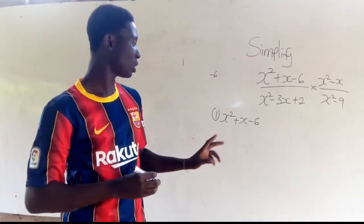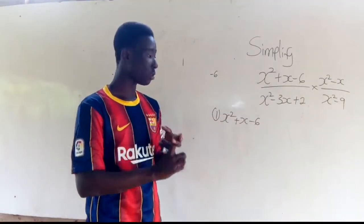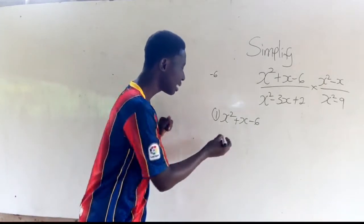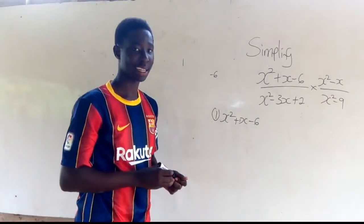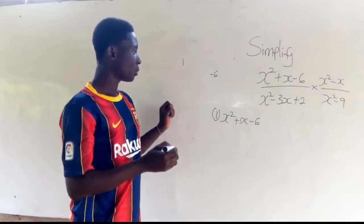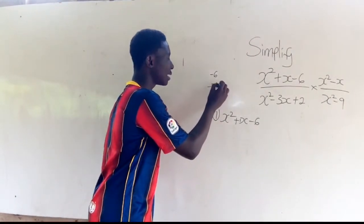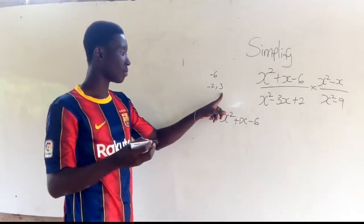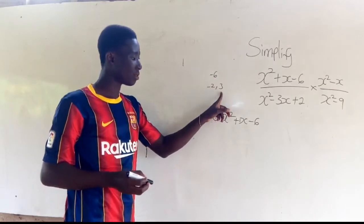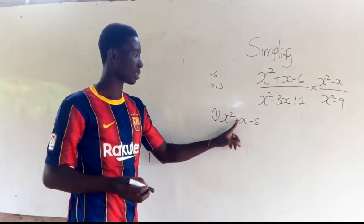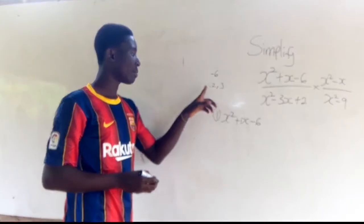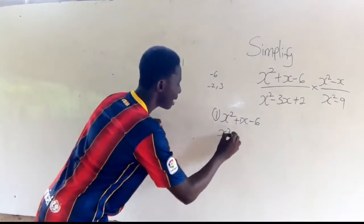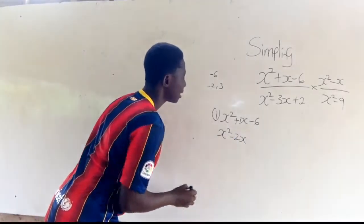We are going to look for two numbers that when multiplied give minus 6, and when added give the coefficient of x, which is 1. We can try minus 2 and 3: minus 2 times 3 gives minus 6, and minus 2 plus 3 gives 1. So we can use minus 2 and 3, and rewrite as x squared minus 2x plus 3x minus 6.